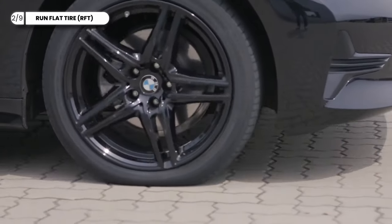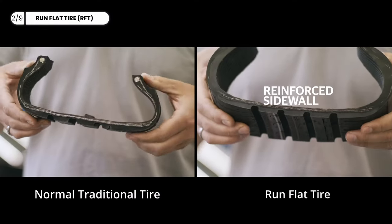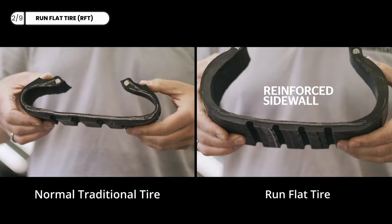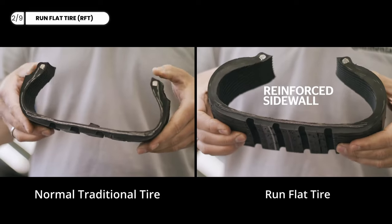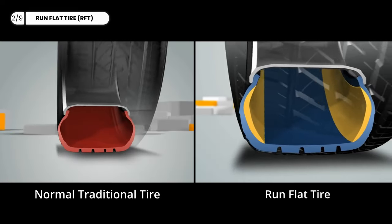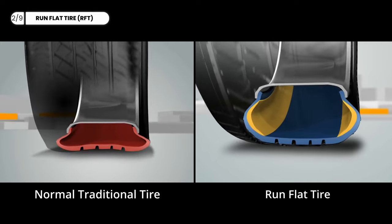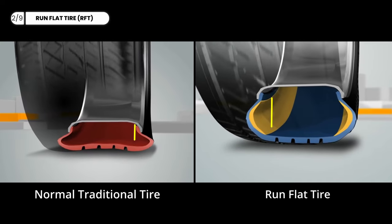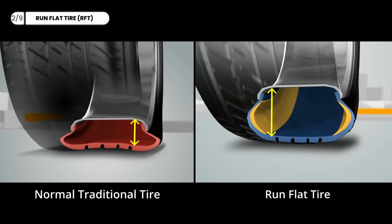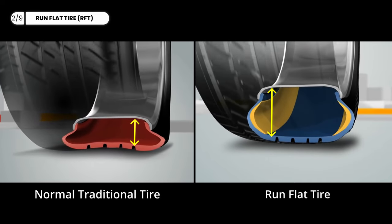In addition to reinforced materials, run-flat tire sidewalls are often thicker compared to those of traditional tires. In the event of a puncture, the reinforced sidewalls enable the tire to maintain its shape and support, allowing the driver to continue driving for a limited distance at reduced speeds.